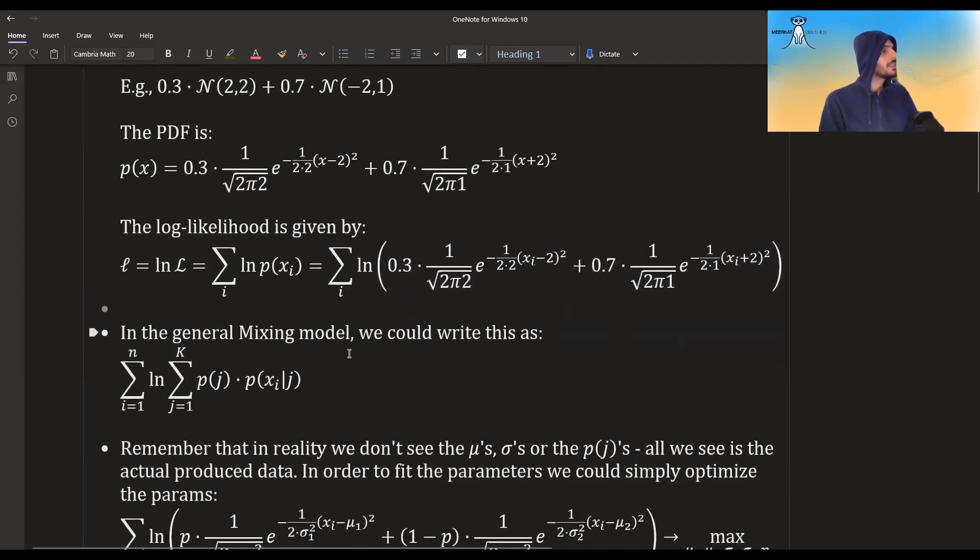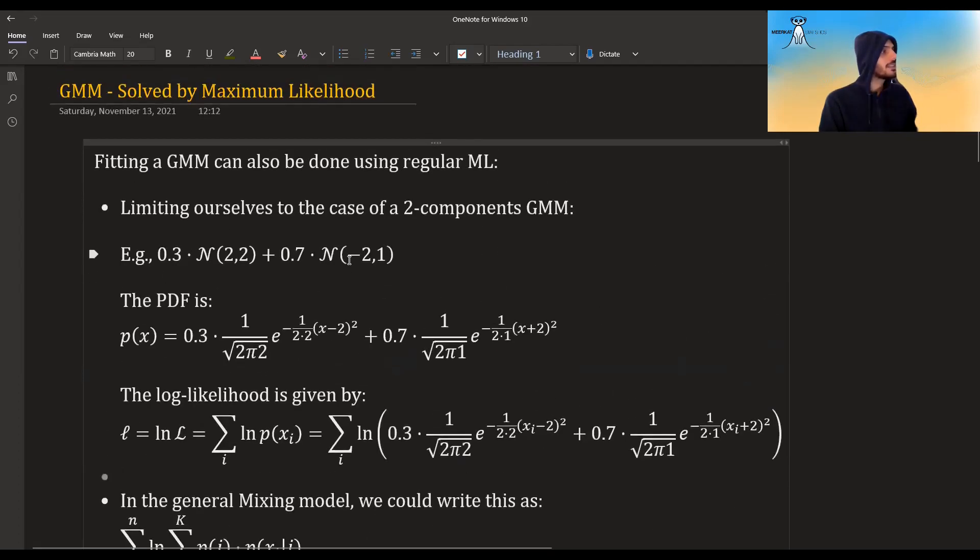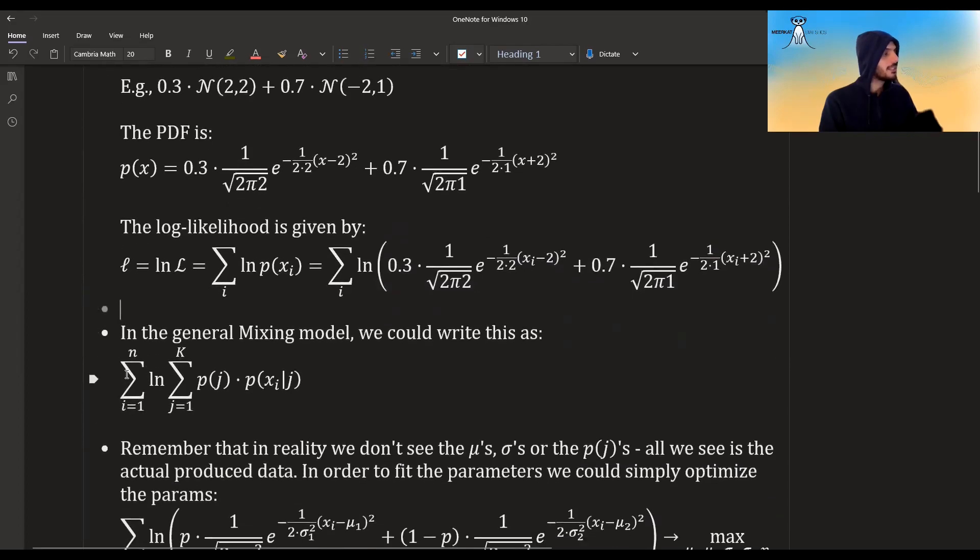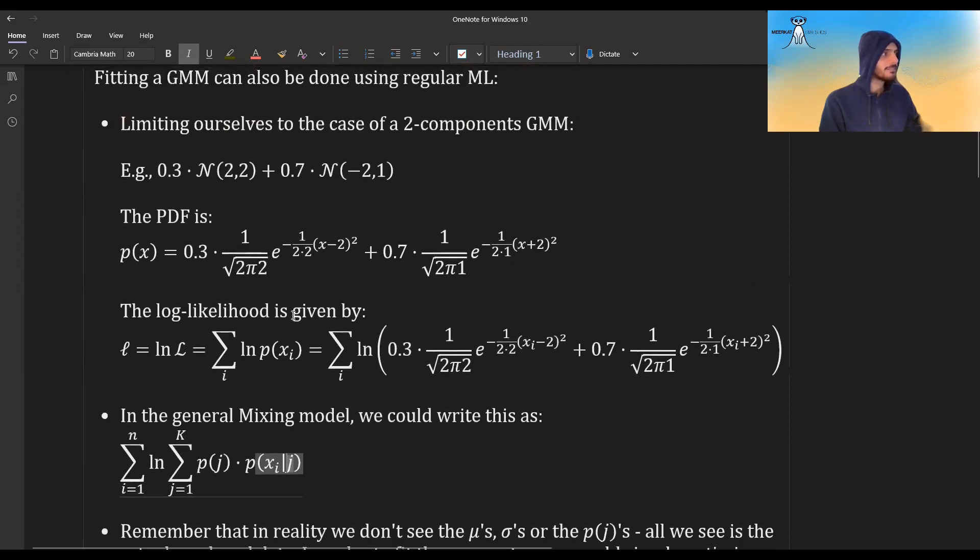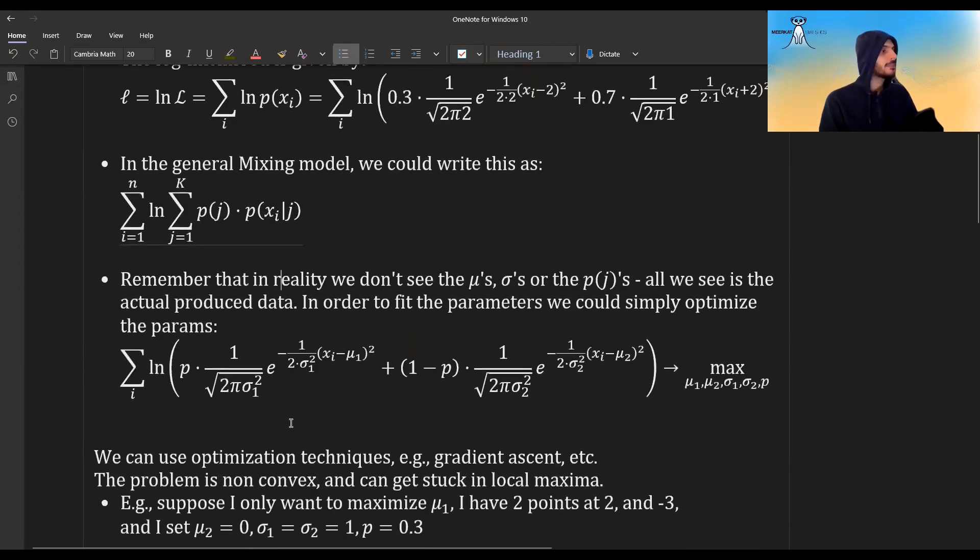In the general mixing model, not just looking at this concrete example, but more generally it would look something like this. You have a sum over the observation of logs, and inside the log you have a sum over all the components and the probability of being in that component times the probability of seeing the data given that you are in this component. So basically this times this.